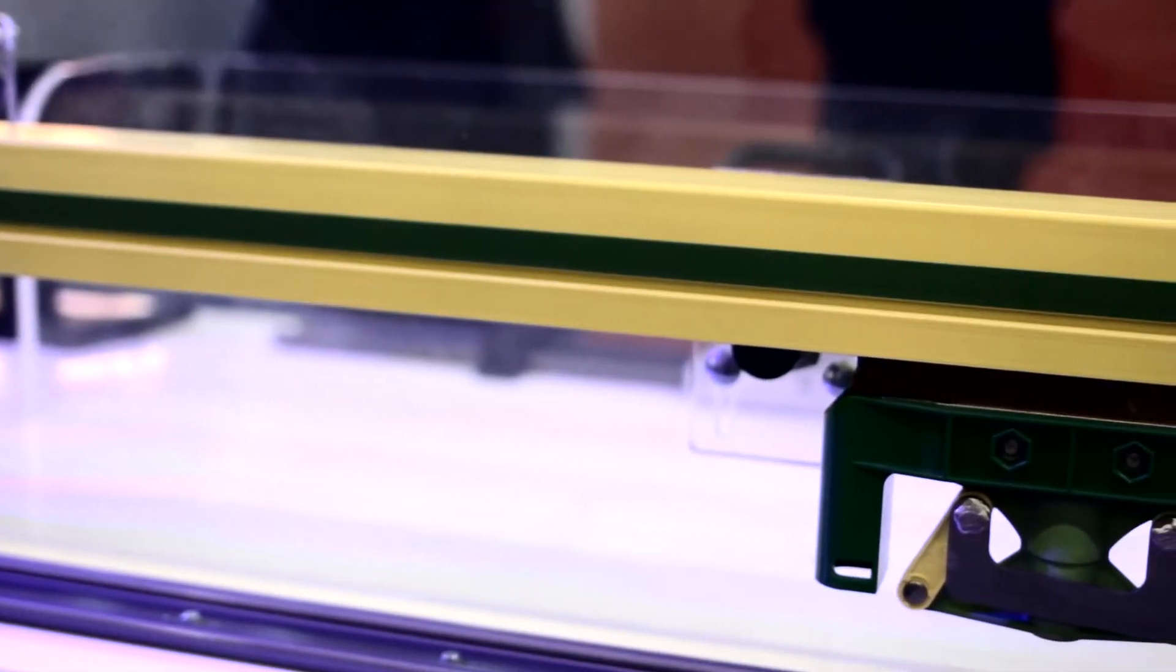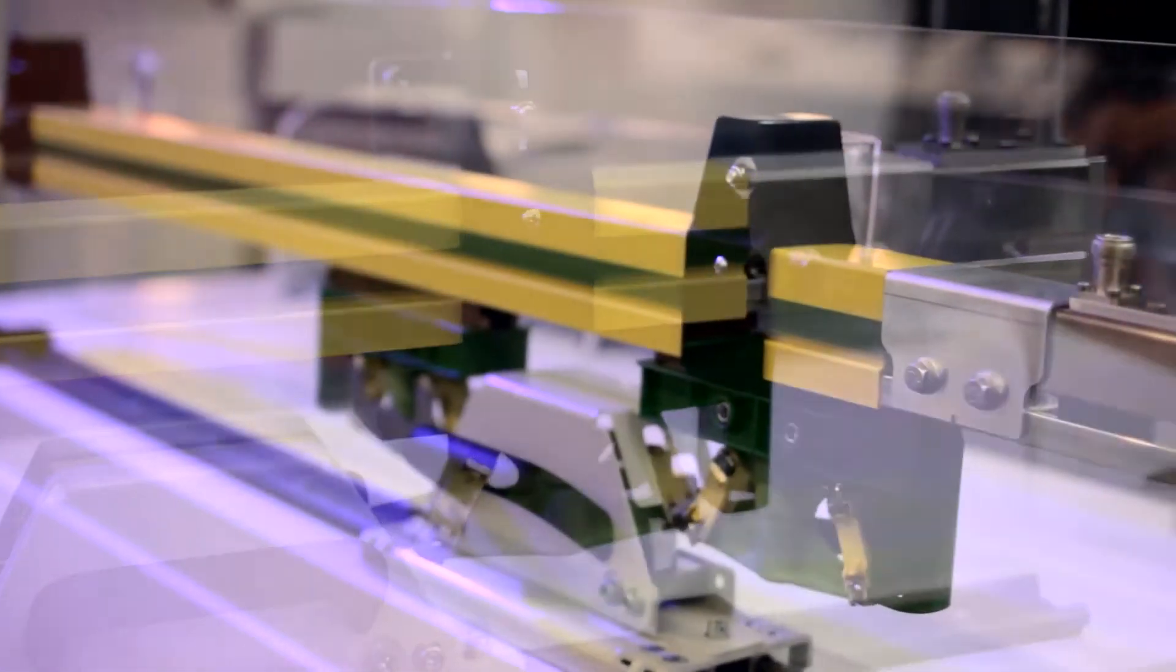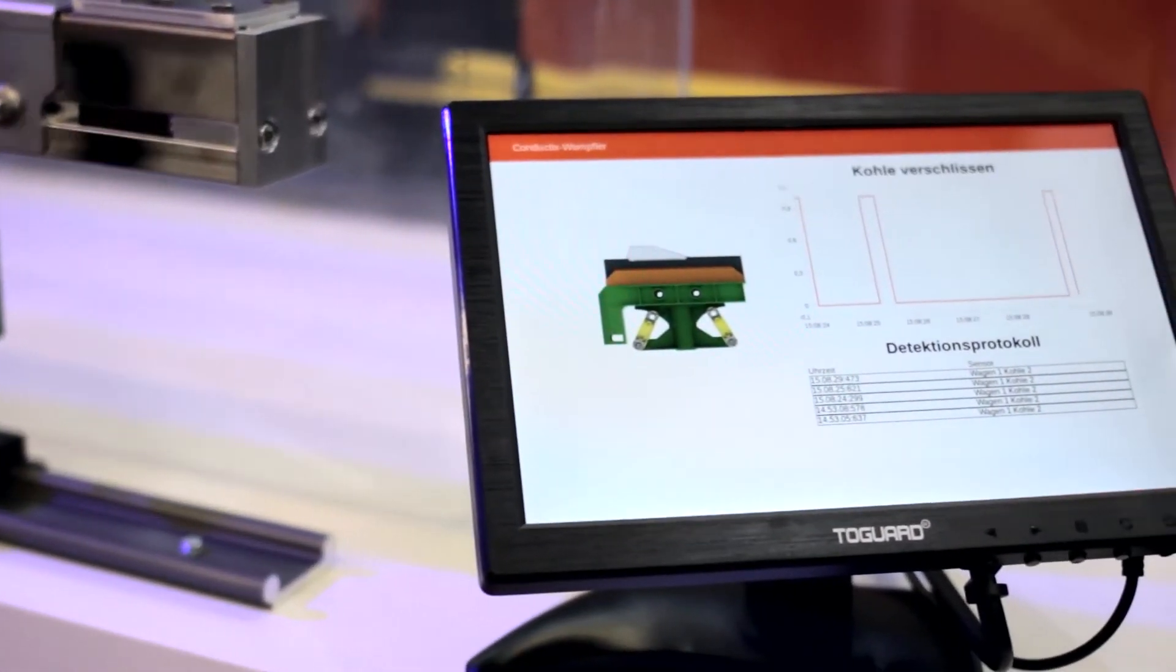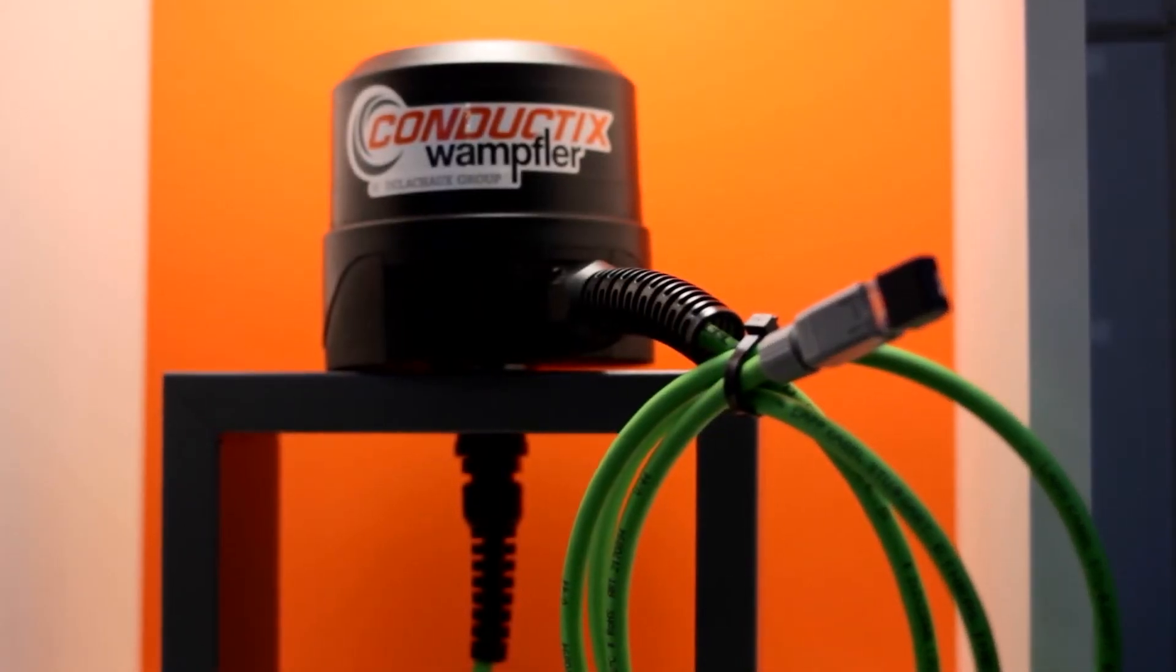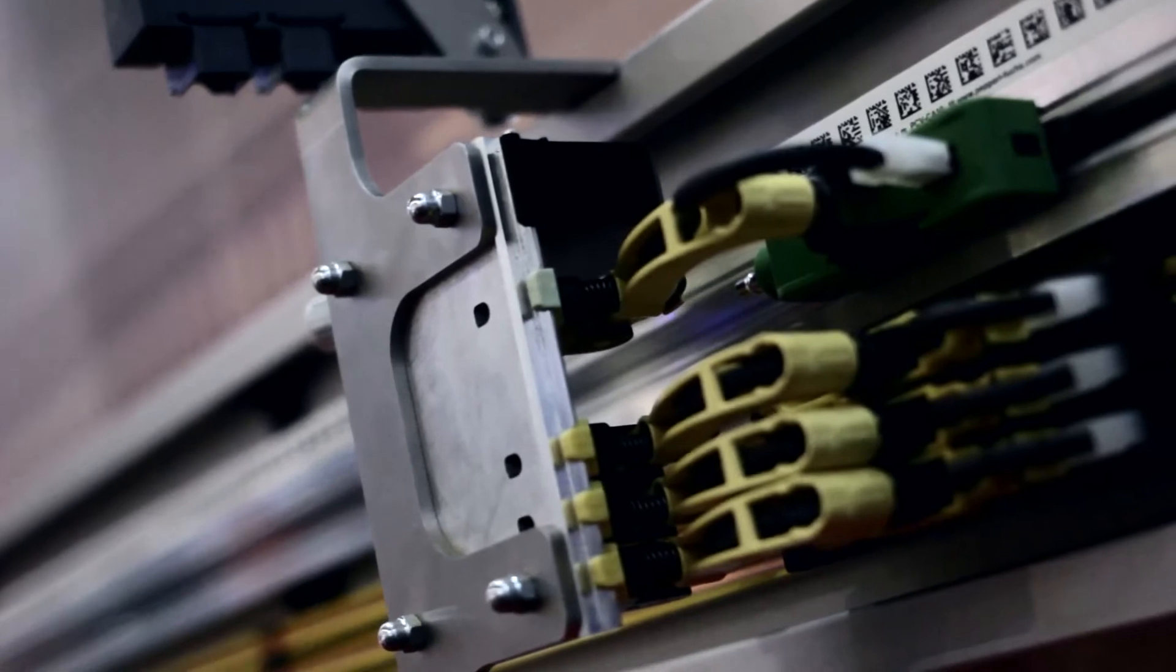We decided to become a member of CLPA and in particular to focus on CC-Link IE field because at the moment it is the first and only protocol that works at one gigabit per second with real-time characteristics. This is good for us because developing a slip ring certified for CC-Link IE field allows our customers to have the assurance that we are able to transmit not only power but also very high data rates on our slip rings.